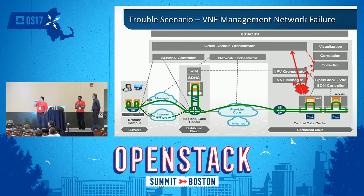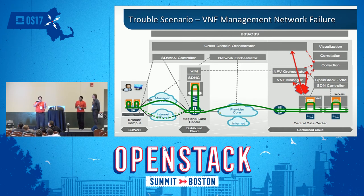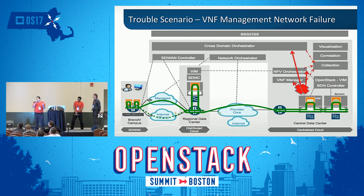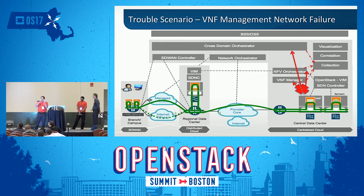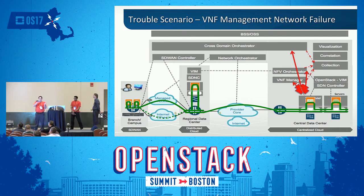Our next scenario covers management networks. A lot of these things today are being managed over management networks, and whether a device is up or not is determined over the management network. If the management network goes down, your VNFM, your NFVO, and your cross-domain orchestrator may all detect that the device is down — but they're not correlating. They don't know that it's because the management network is down and they can't reach the device. So they're going to try and heal it. In this scenario, the customer wasn't even down — they were up and running happily because their traffic doesn't flow over the management network. When the VNFM or NFVO takes that down, they've basically caused an outage while trying to help.